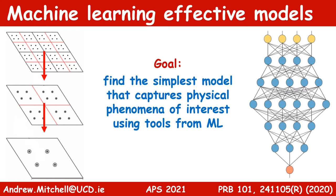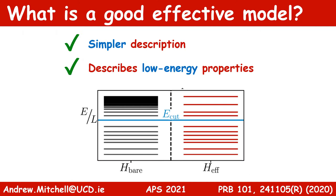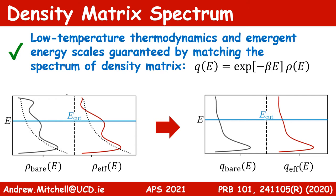One solution is to use machine learning techniques to derive better effective models. Our goal is to find the simplest model that captures the physical phenomena of interest. But what makes a good effective model? We'd obviously like a simpler description that still captures the low energy physics we're interested in. In particular, we want the low energy eigenspectrum of the Hamiltonian, up to some cutoff, to match in the bare and effective models. In principle, we can optimize the parameters of a given effective model by matching its density matrix to the density matrix of the microscopic model. Low temperature thermodynamics and emergent energy scales are therefore guaranteed to match in the bare and effective models if we match the density matrices — this contains all of the information we could need. If we're able to match the spectrum of the density matrix, then we know we have the right effective model.